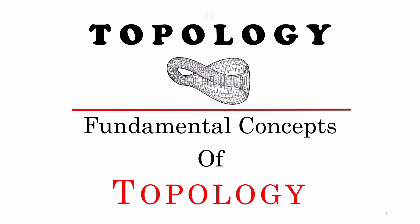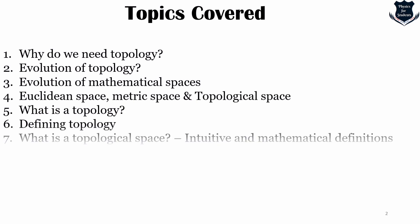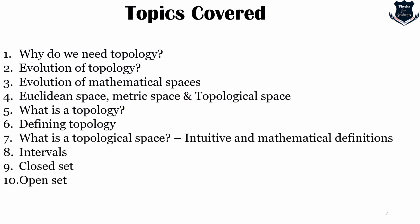Before we go ahead and start going deep into the subject, let us look at the topics we are covering. First, we need to understand why we need topology at all, what is the evolution process, and how the evolution of mathematical spaces from Euclidean space to metric space and topological space takes place. We'll also cover what topology is, how to define topology and topological space both intuitively and mathematically, what are intervals, and what are closed sets and open sets.